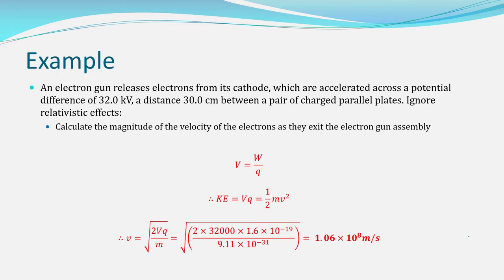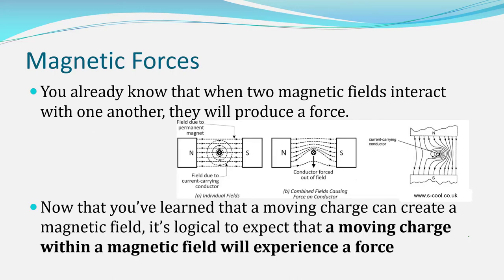So how do we go from magnetic fields being generated to having a magnetic force on a charge or a conductor? If you have a charge-carrying conductor in a magnetic field, the magnetic field generated by that conductor will interact with the nearby external field. Whenever you have a charge or a current running through a magnetic field, you can expect it to experience a force, just like any other magnet in that same field.